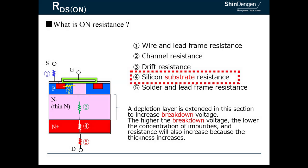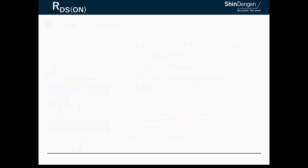Layer four is called the silicon substrate resistance. It is characteristically unnecessary, but it accounts for most of the thickness of the die. The main role is to ensure the strength of the wafer, so the impurity concentration is increased to lower the resistance value.